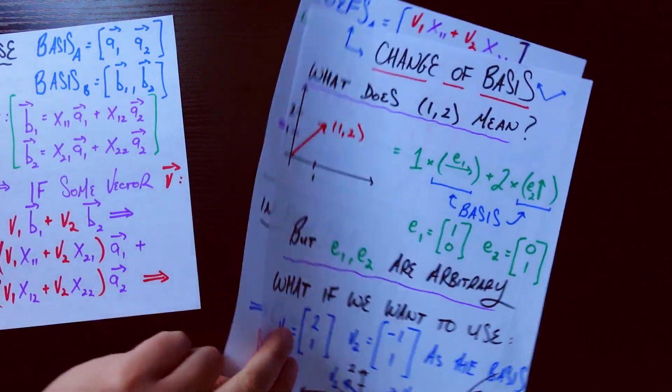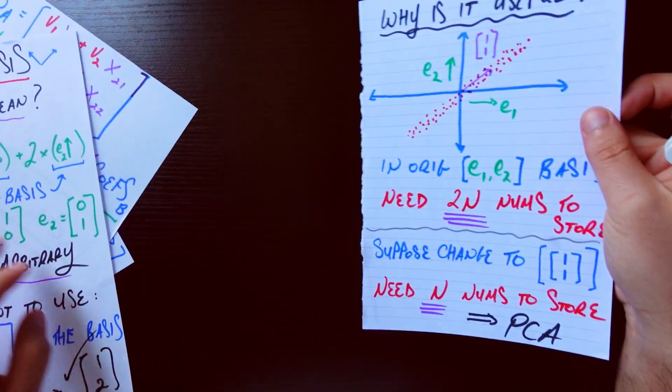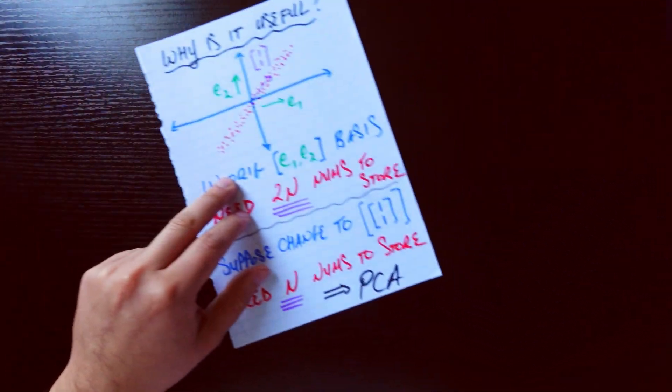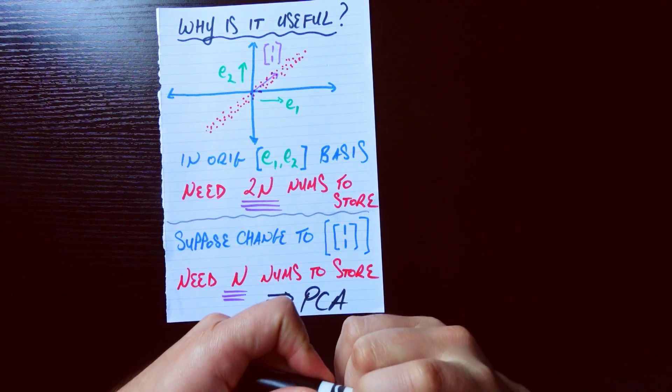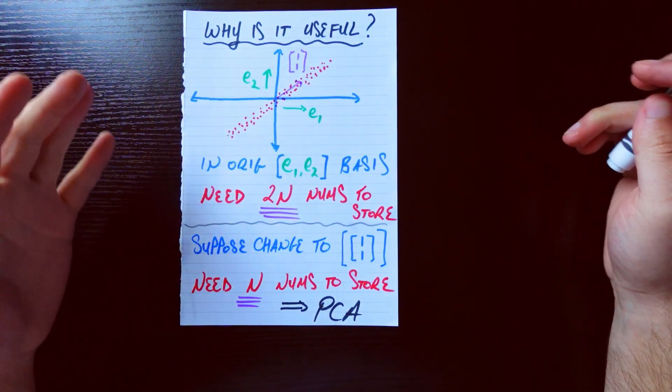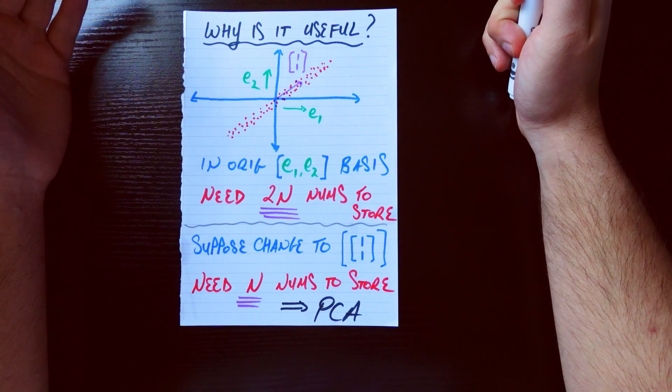And finally let's talk about why should we care. Is this just some kind of mathematical magic trick, or is there actually some applications to this. There are tons of applications to this. You'll see this in many many research papers and industry applications. But one that comes to mind is PCA, Principal Component Analysis.